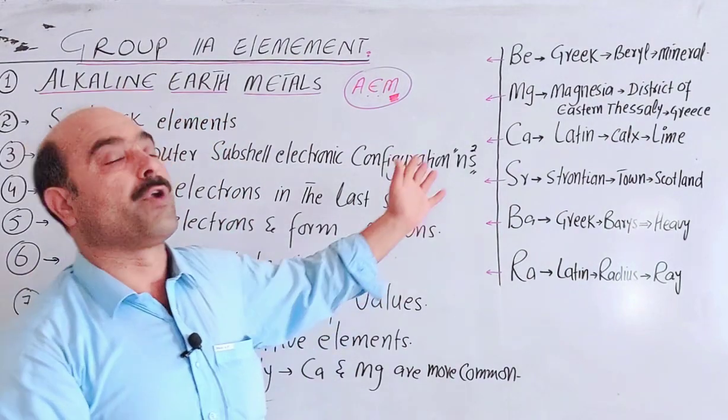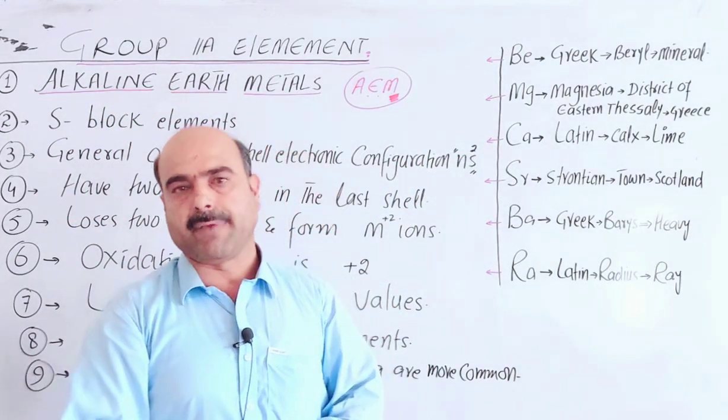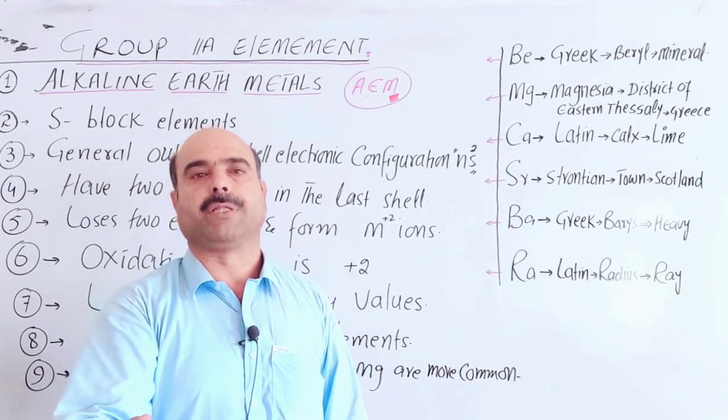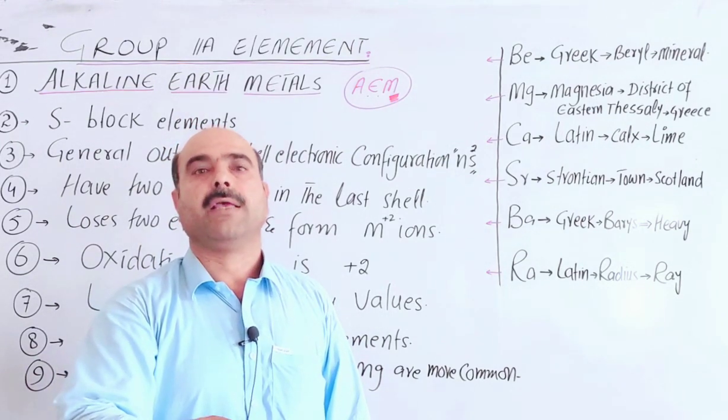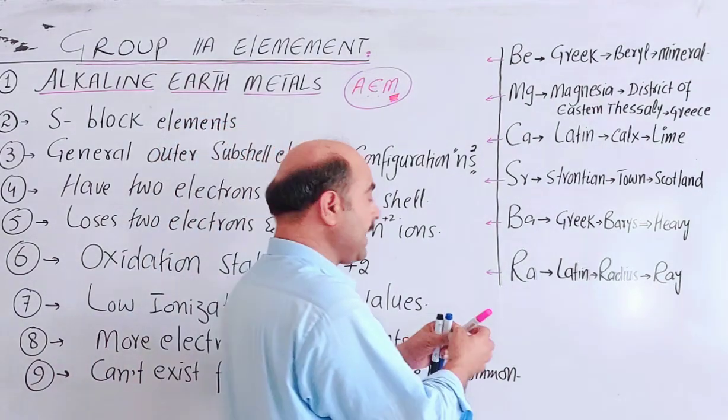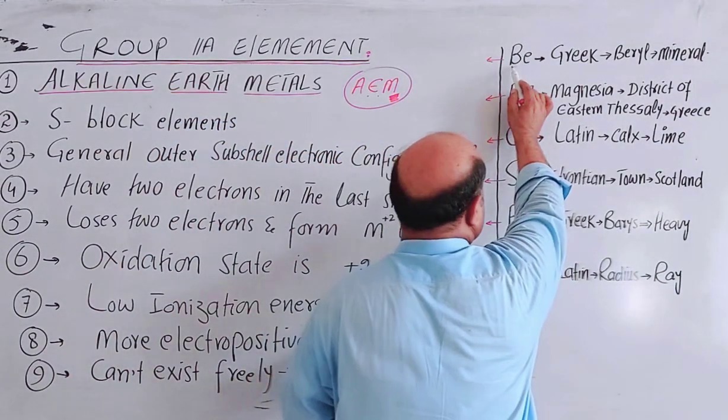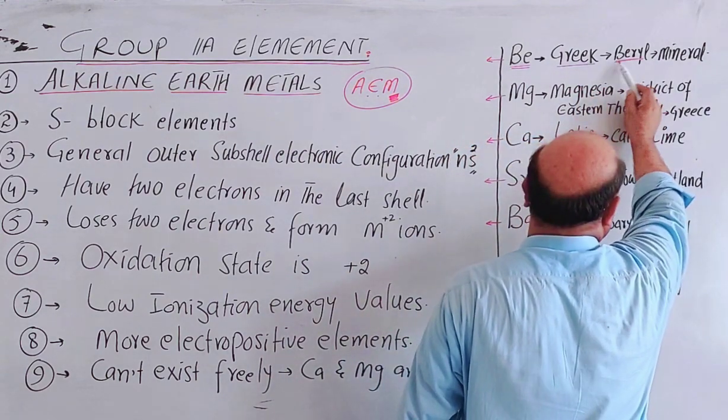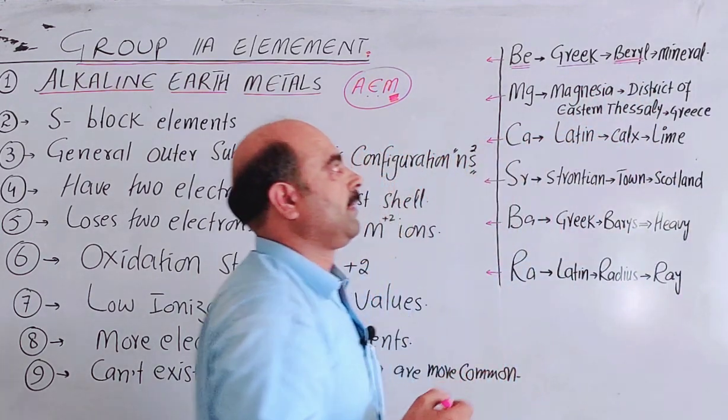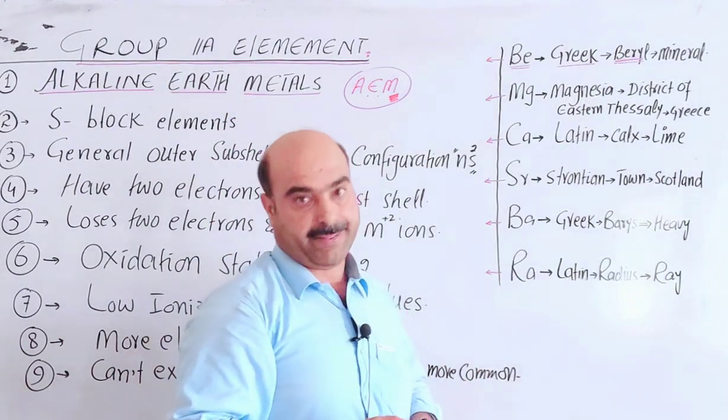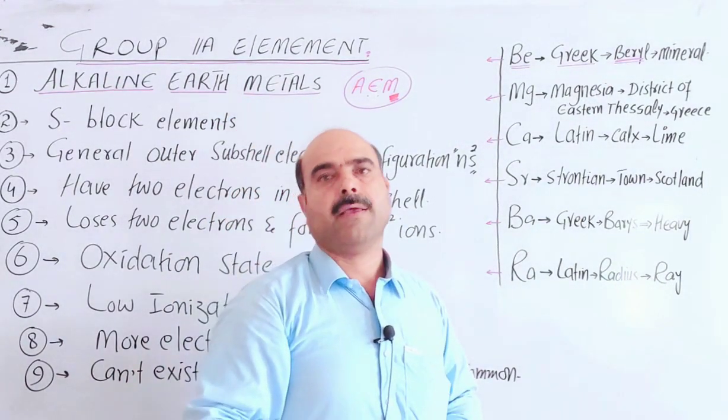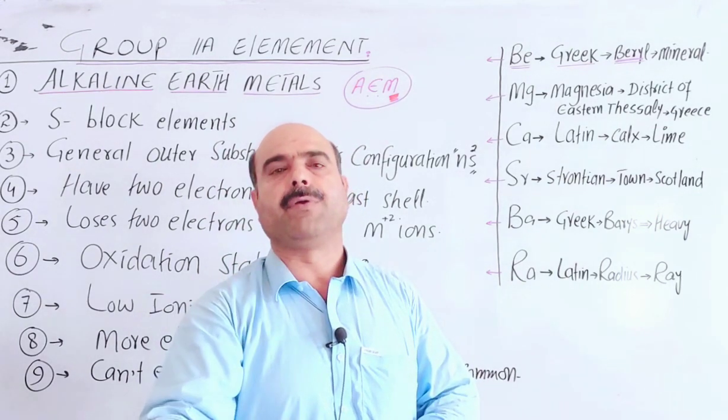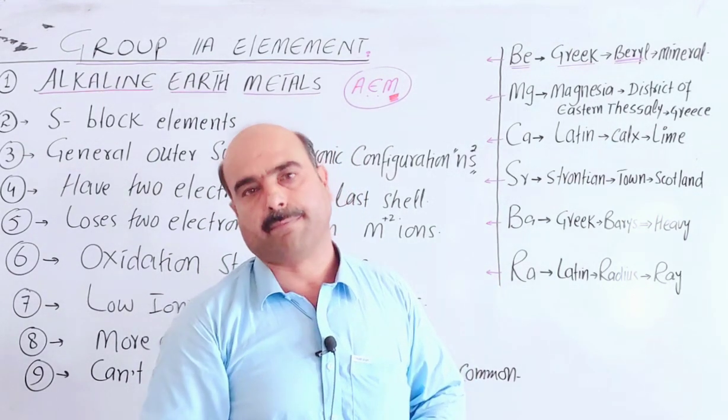The names of elements have different origins - Latin origin, Greek origin, property origin, or place origin. The first one is beryllium, symbol Be. Beryllium is a Greek word. Beryllium is derived from beryl, which is a mineral. Naturally occurring compounds of metals along with impurities in the earth crust are called minerals.